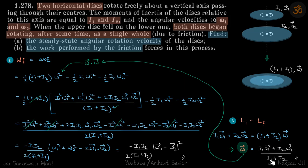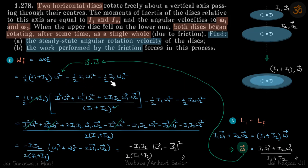For the second part — work performed by friction — friction is the only force doing work on the system, so work done by friction equals the change in kinetic energy. Final kinetic energy is ½(I₁ + I₂)ω² minus ½I₁ω₁² minus ½I₂ω₂².